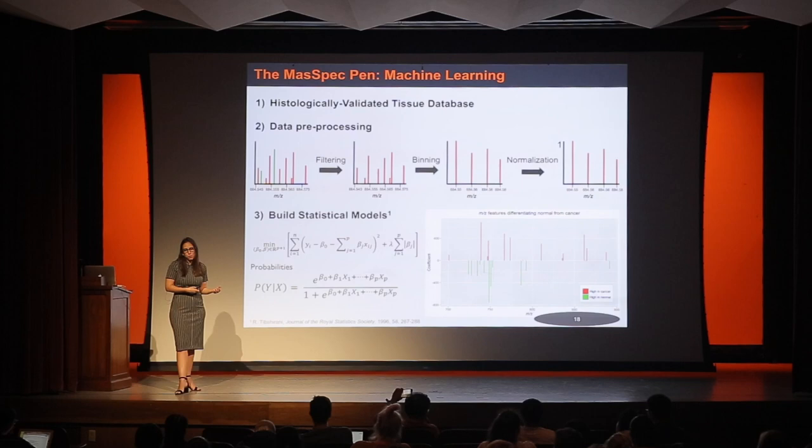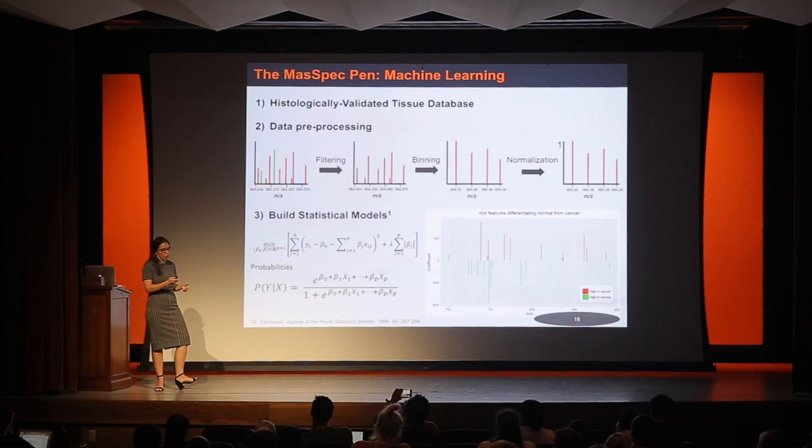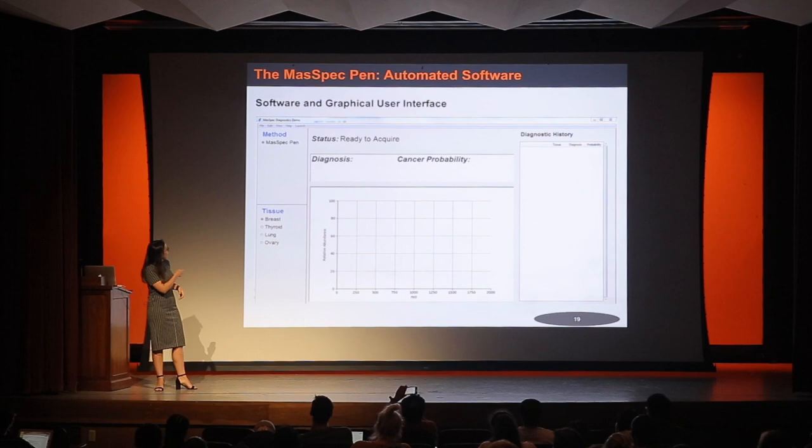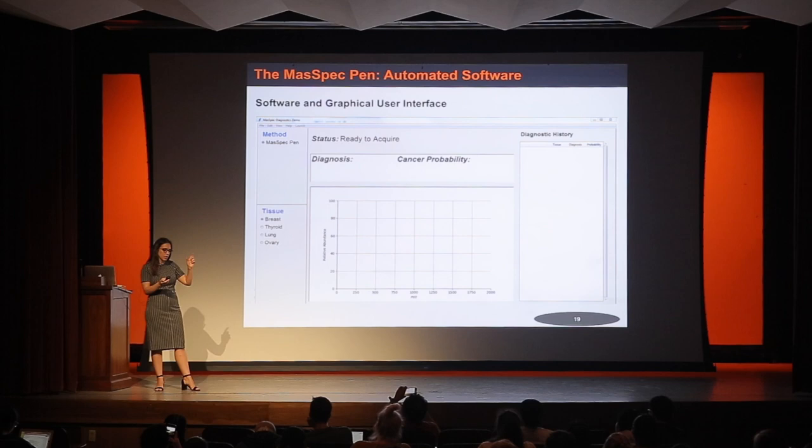This is our graphical user interface. You can select the mass spec pen method and what surgery you're doing — breast, lung, ovary, we have a lot more now. Once you press the foot pedal and do the analysis, there's an audio cue when it's over. You remove the pen, and the software runs through and gives you the spectrum, the diagnosis, and the associated probability. Statistical analysis is always going to have an associated probability — it's not always 100% — but we continue to build our methods to improve on that.